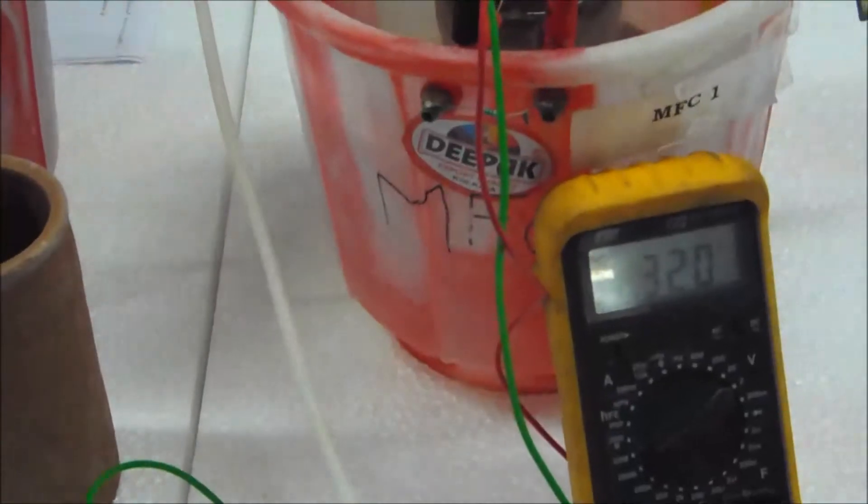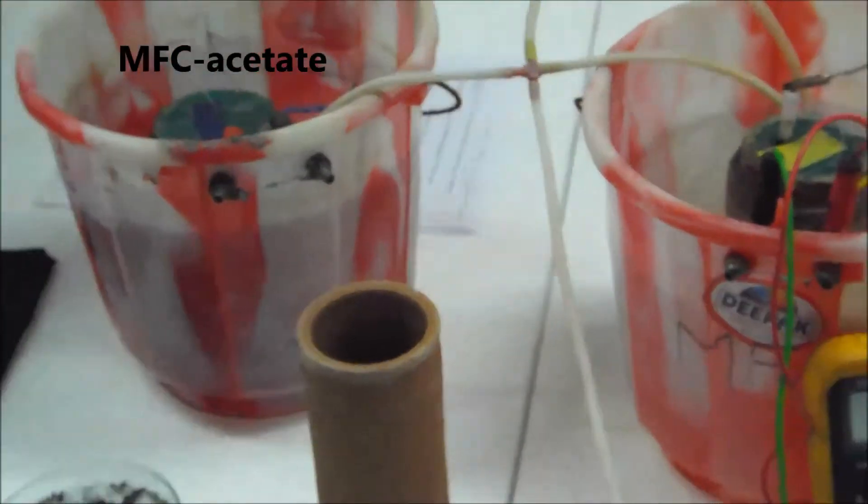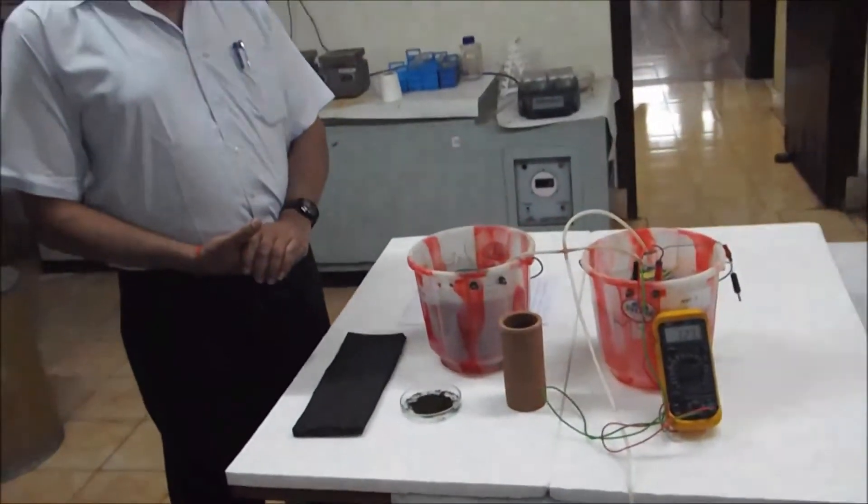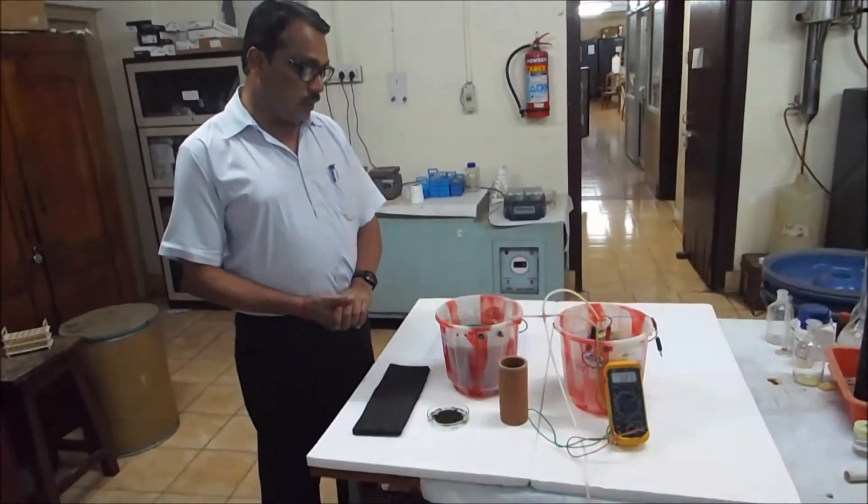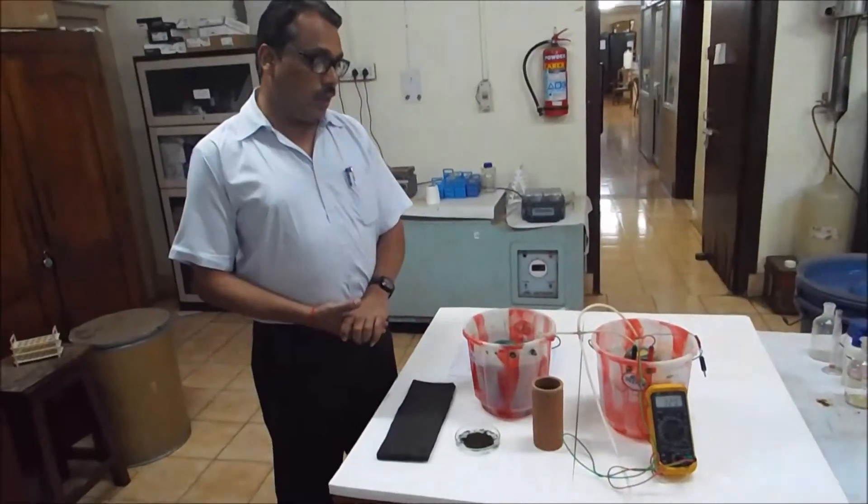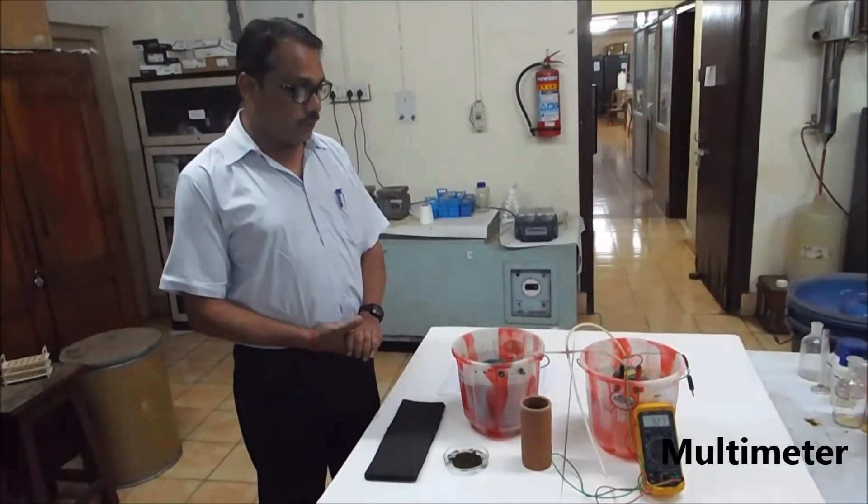And the MFC fed with acetate only as a substrate, without any treatment or any addition of the marine algae, demonstrated only about 17% coulombic efficiency. As compared to any of the MFC reported in the literature, the coulombic efficiency that we observe is manifold and because of that, we are able to harvest more power from the substrate that we are using.